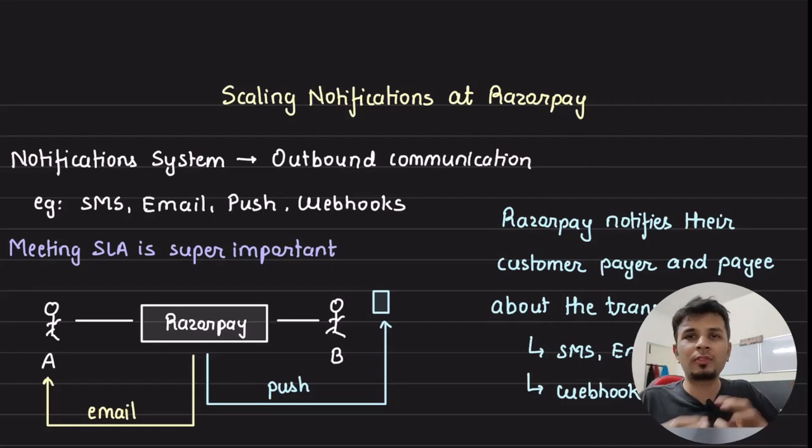Notifications are extremely crucial for fintech companies as it is a way to notify a user about an incoming transaction. Hence it becomes extremely important for companies like Razorpay to ensure that the notification is delivered to the user within a certain amount of time. In this video, we take a detailed look into how Razorpay scaled their notification systems and look at their high-level architecture and key design decisions they made along their way to ensure that they always meet their SLAs.